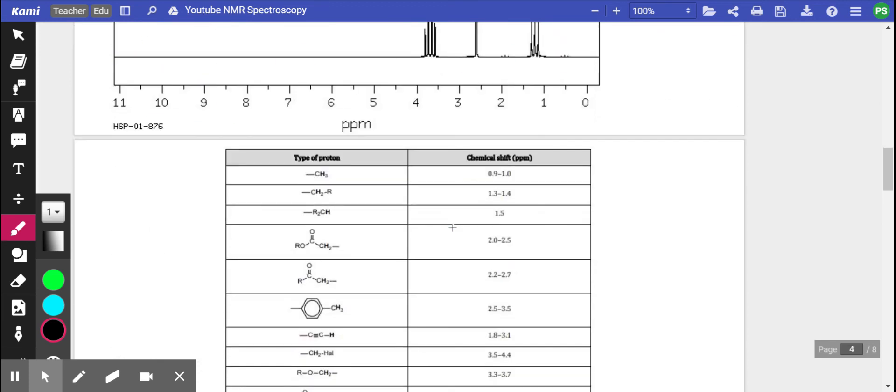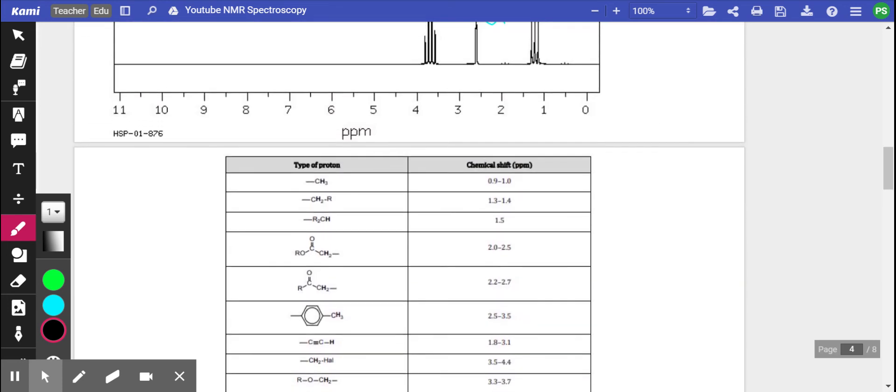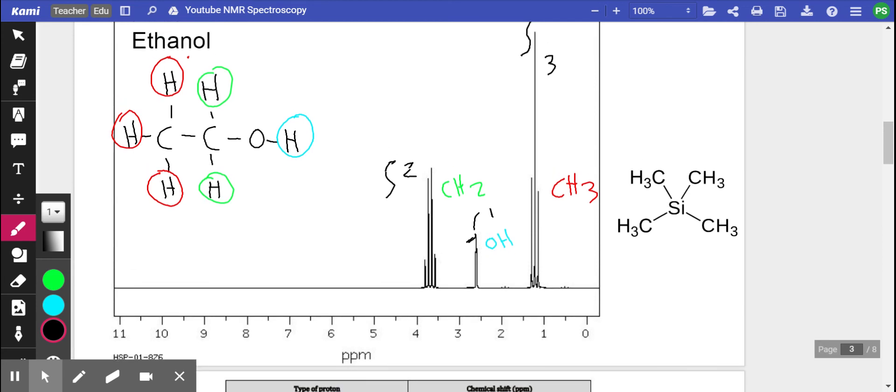And a CH2 group next to an oxygen is this one here, and it's 3.3 to 3.7. And in fact, as we can see in ethanol, it is at 3.7.